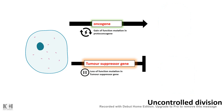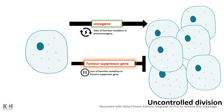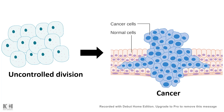Any uncontrolled mutation or uncontrolled proliferation would be a cause of cancer. Any gain-of-function mutation in proto-oncogenes or loss-of-function mutation in tumor suppressor genes might lead to uncontrolled division, which would ultimately lead to cancer. It is important to understand that any loss-of-function mutation in tumor suppressor genes would create cancer.